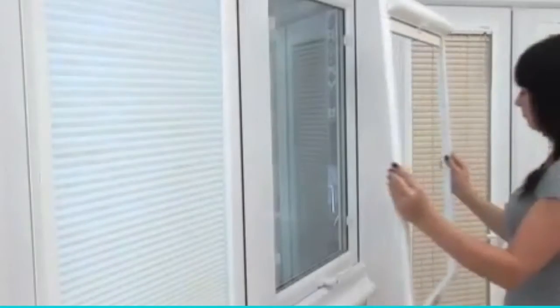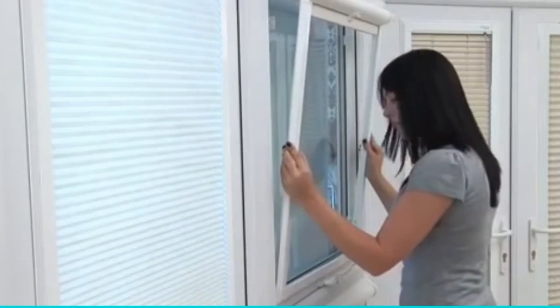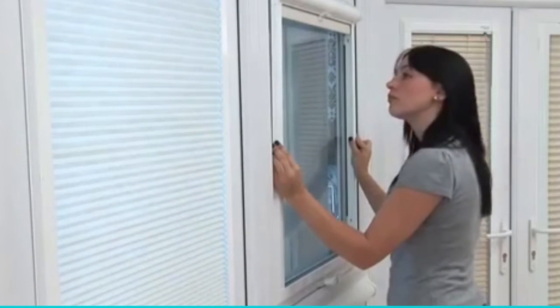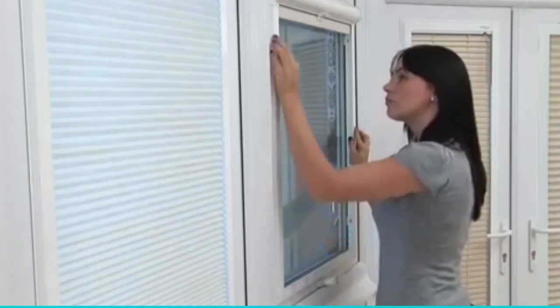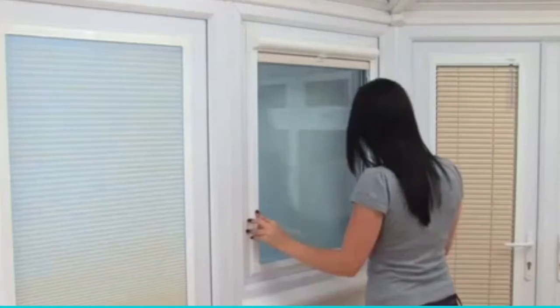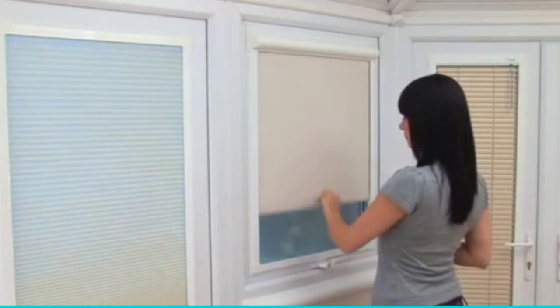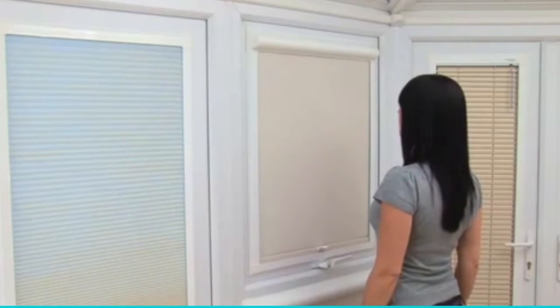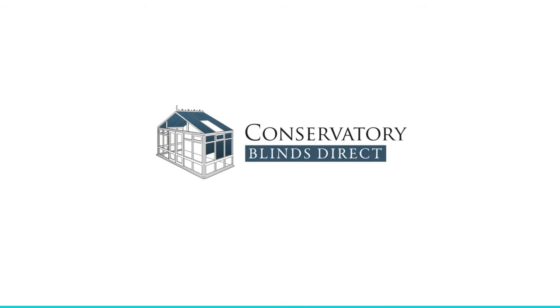Next, take your perfect fit blind with the fabric or slat drawn up to the top of the frame. Offer it up to the window and carefully position the frame onto the lugs of the fixing brackets and click all four sides securely into place. Your perfect fit blind is now installed and ready for use.